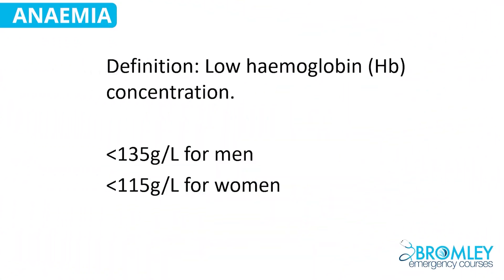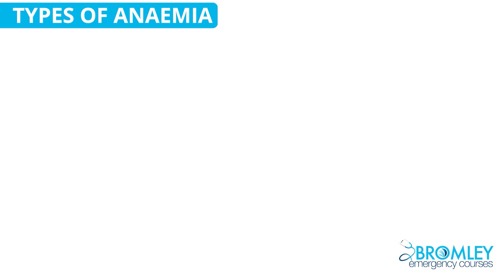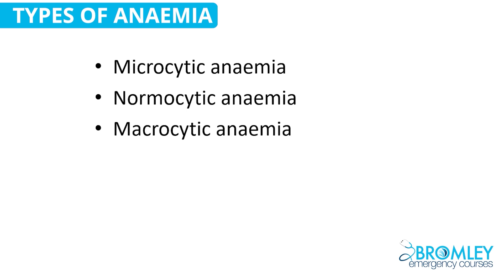By way of definition, a hemoglobin less than 135 grams per litre — previously referred to as 13.5 grams per deciliter — for men, or 115 grams per litre (previously 11.5 grams per deciliter) for women, are the thresholds below which we refer to it as anemia. We classify anemia largely by the size of the red cells: microcytic, normocytic, and macrocytic, depending on whether they're small, normal, or large. We also have haemolytic anemia, which we'll come to later.